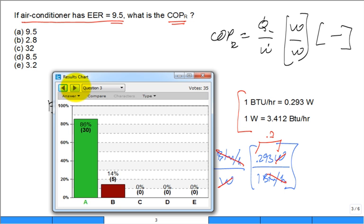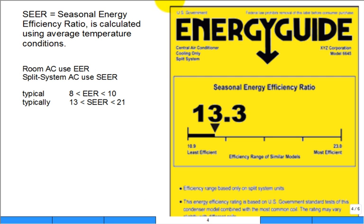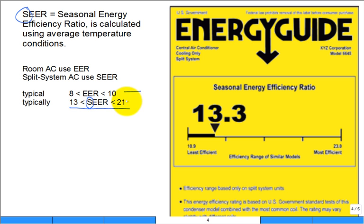More commonly used is the Seasonal Energy Efficiency Ratio, or SEER. Rather than a fixed warm outdoor temperature, SEER uses a varying outdoor temperature. On a mild day the air conditioning system is more efficient — higher efficiency — while on a really hot day efficiency drops. The seasonal average is captured in the SEER rating for split systems or residential systems, and SEER is typically much higher than EER — ranging from 13 up to 20 or 21.